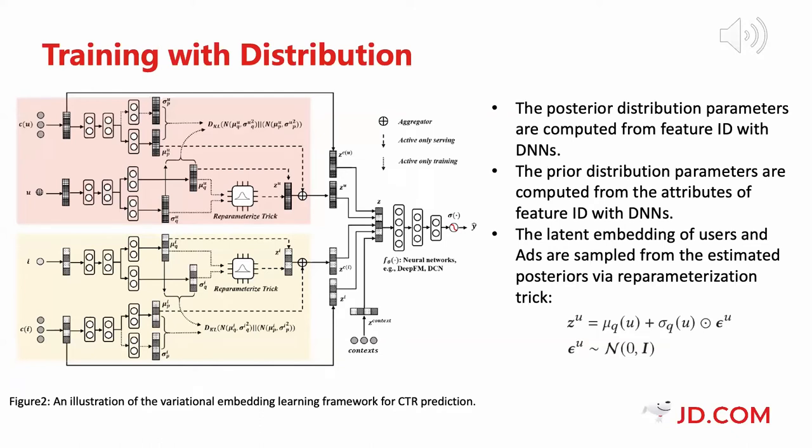During the training stage, the posterior distribution parameters are computed from feature ID with DNNs, and the prior distribution parameters are computed from the attributes of feature ID with DNNs. The latent embeddings of users and ads are sampled from the estimated posteriors via the reparameterization trick, and the final input embedding V from the discriminative model is obtained by concatenating the embeddings of user, ad, context, and attributes of user and ad.